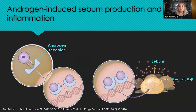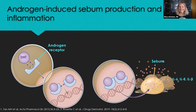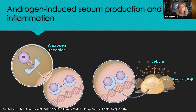Androgens increase sebum production, but they also increase inflammation directly. Within the sebocyte, DHT binds to the androgen receptor and together they translocate into the nucleus, where they affect DNA transcription. This causes an increase in sebum, but also an increase in the pro-inflammatory cytokines interleukin-6, interleukin-8, and interleukin-1 beta. So under the influence of androgen, not only is sebum increased, but within the sebaceous gland we also see an increase in the inflammatory process.